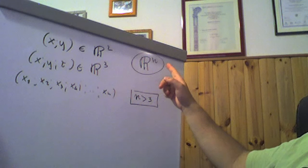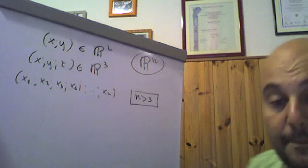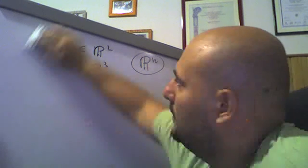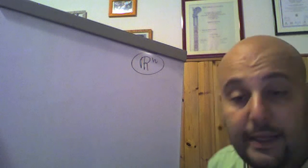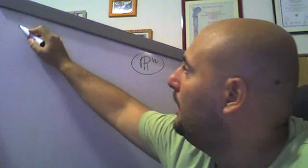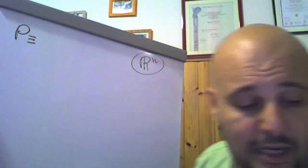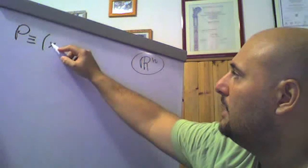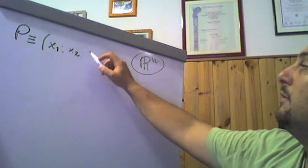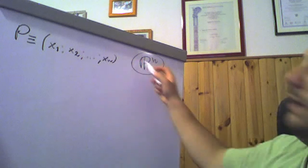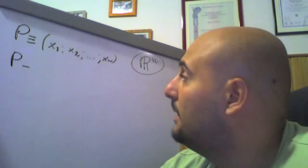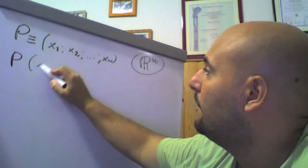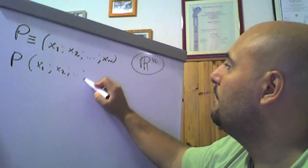Un punto appartenente a questo spazio euclideo Rⁿ si indica sempre con una lettera maiuscola — quindi rimaniamo nella notazione di punti indicati con lettera maiuscola — seguita dall'indicazione delle coordinate del punto. Quindi, per esempio, P = (x₁, x₂, …, xₙ). Un punto generico di Rⁿ si indica in questo modo, oppure senza il simbolo di uguaglianza: semplicemente P(x₁, x₂, …, xₙ).